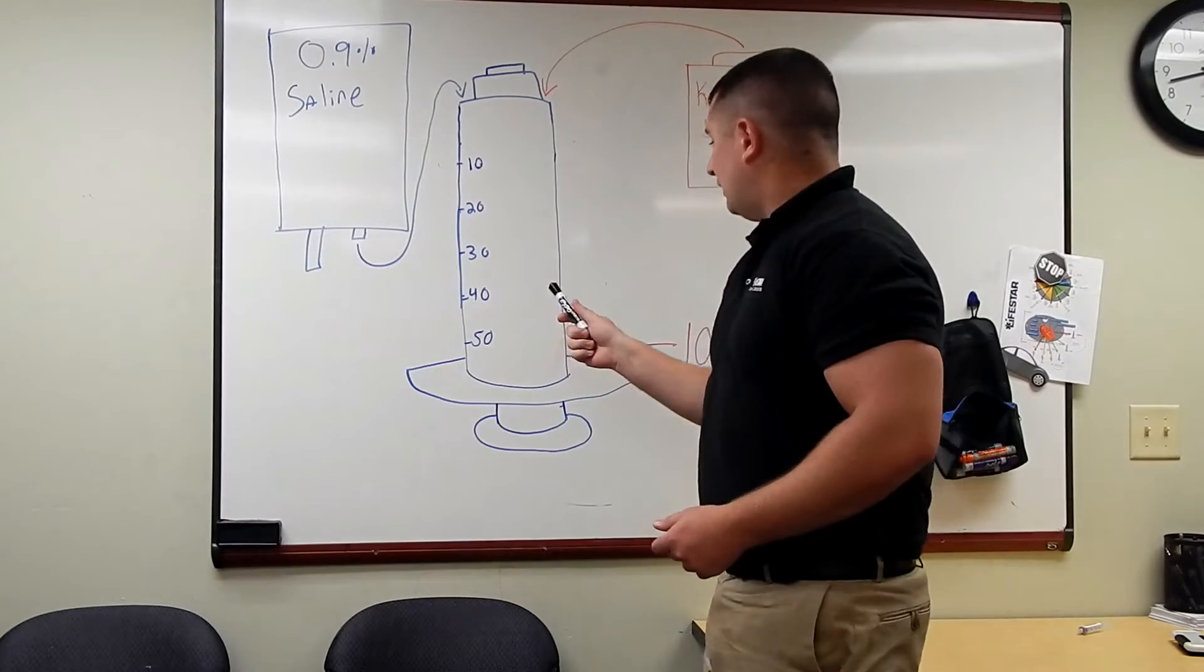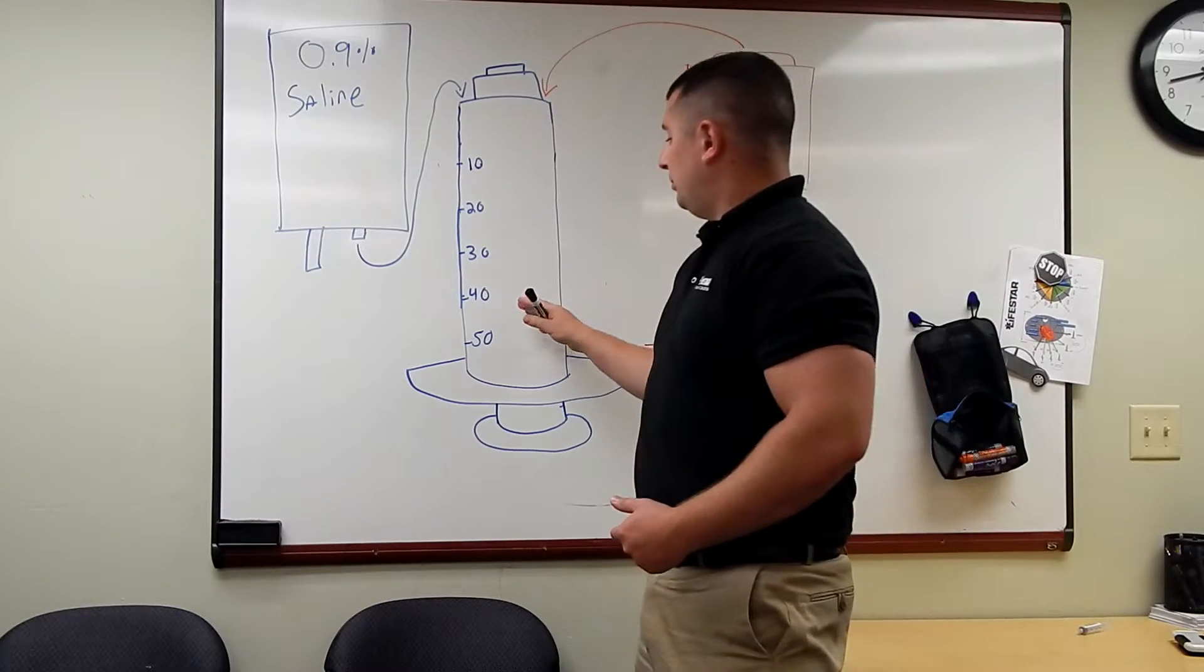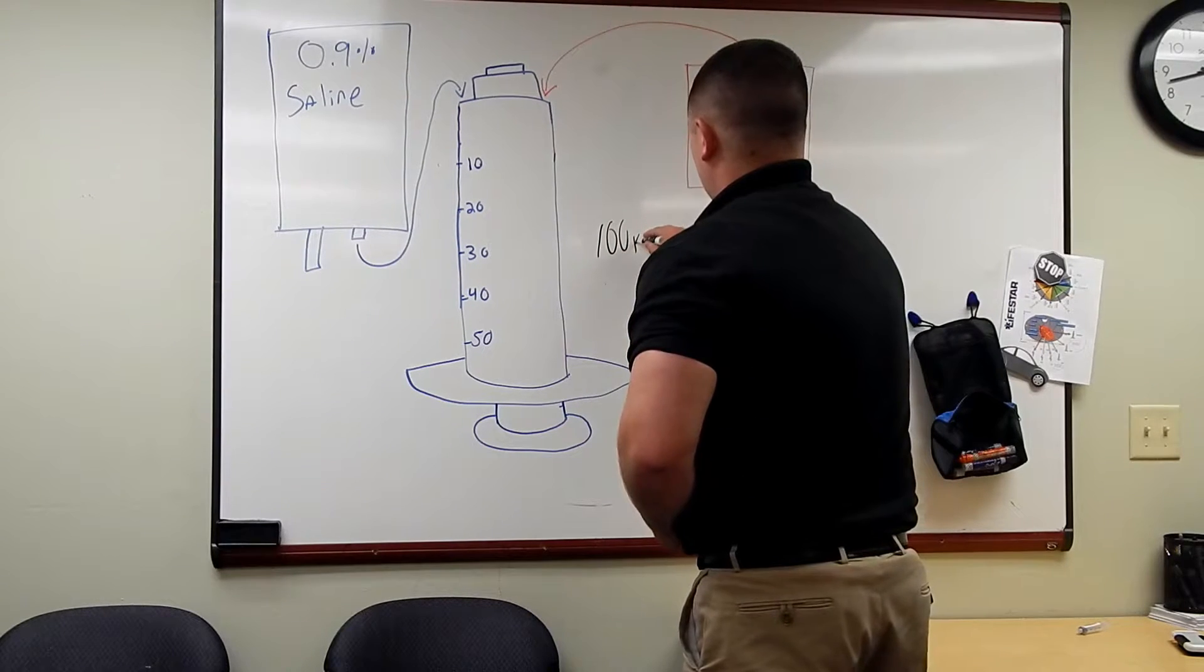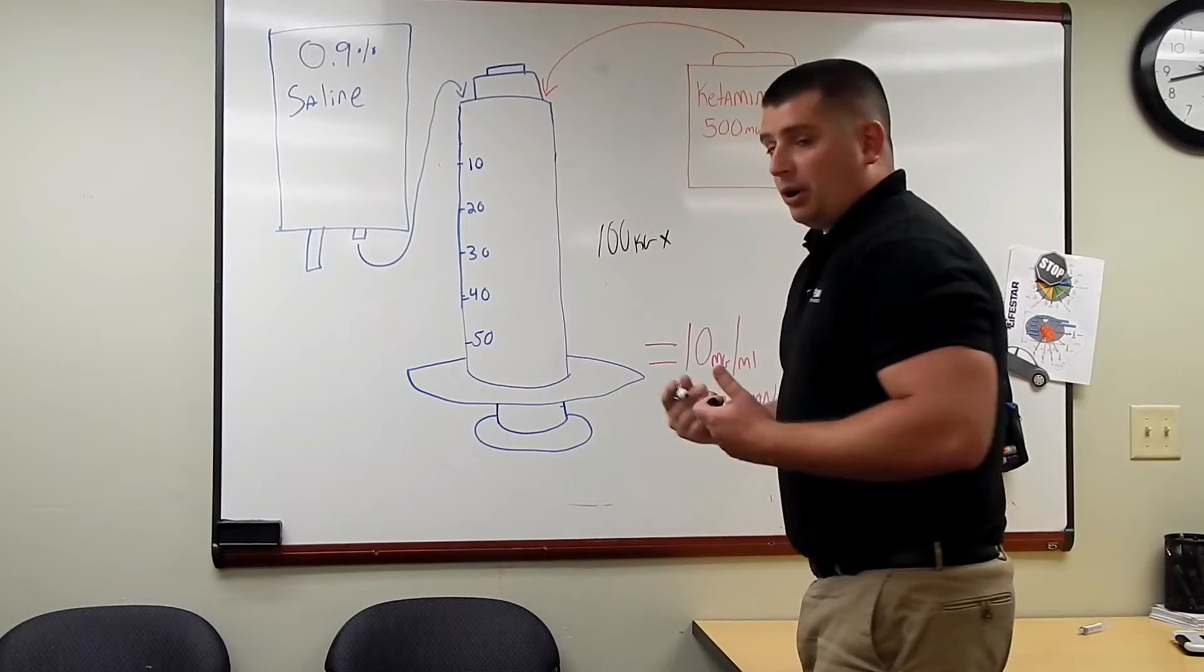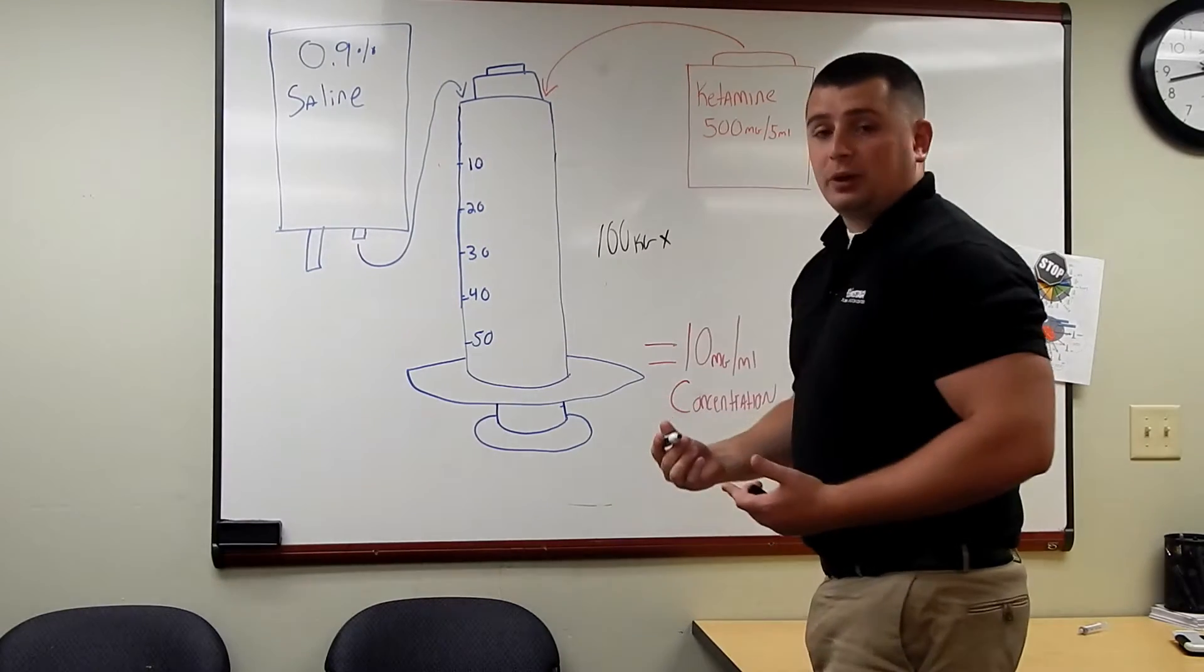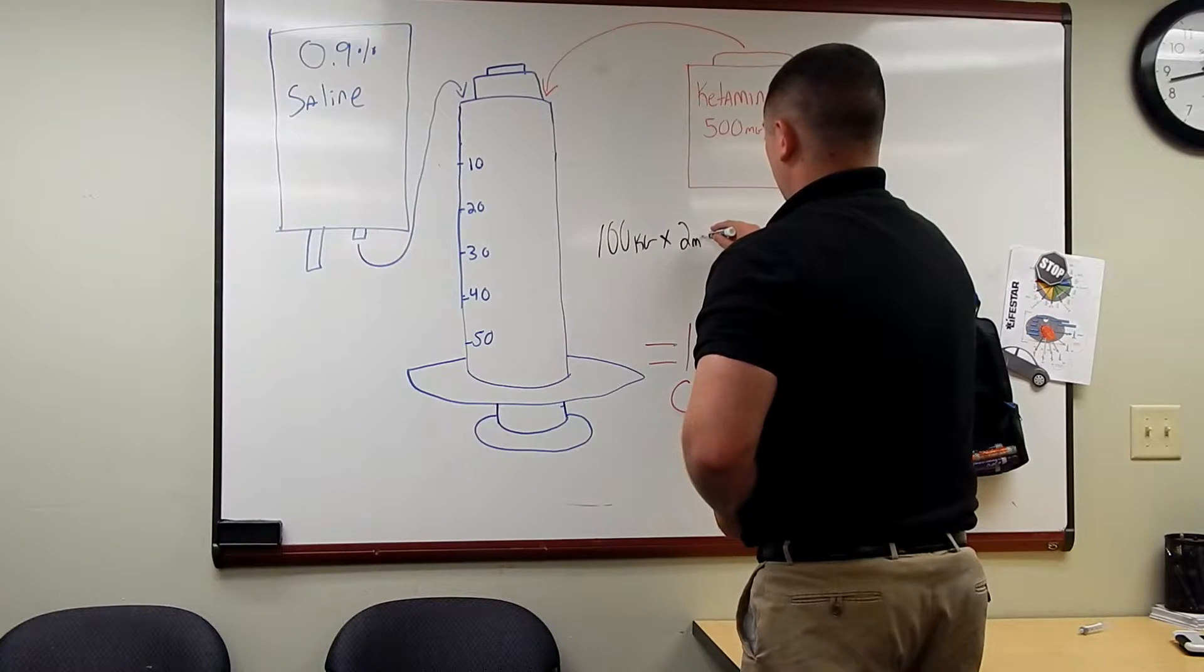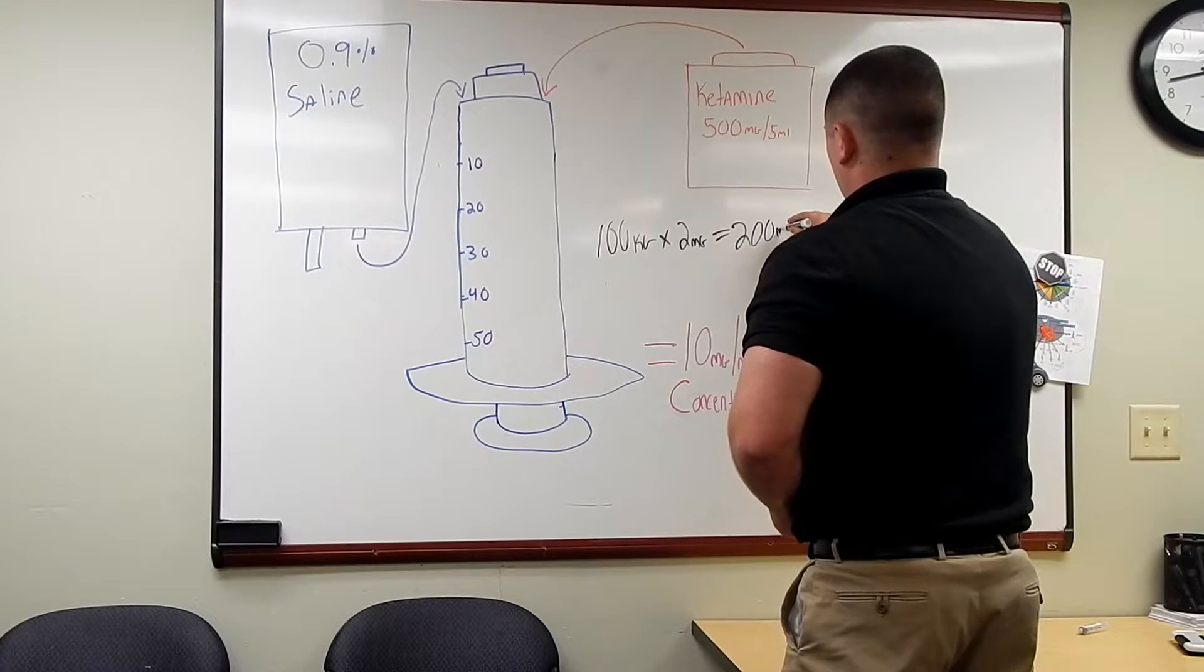What we're going to have is a concentration of 10 milligrams per mL - 500 milligrams in 50 cc's. Now let's say we have a 100 kilogram patient and we're going to start off with our normal induction. We're RSI-ing or we're unloading this medication and we're going to give them 2 milligrams per kilogram. So we've got a total of 200 milligrams that we want to give.